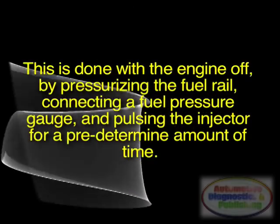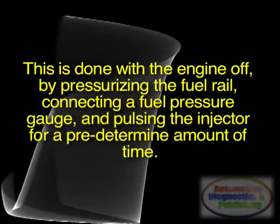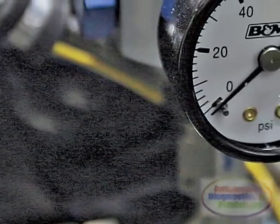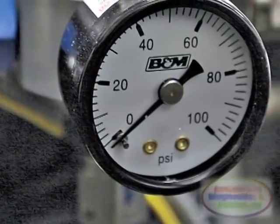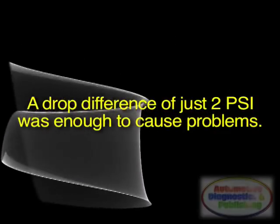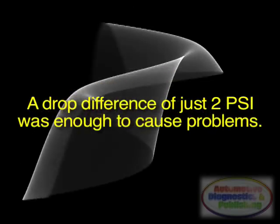The only way to prove the injector was to do a leak-down test using an injector pulser. This is done with the engine off, by pressurizing the fuel rail, connecting a fuel pressure gauge, and pulsing the injector for a predetermined amount of time. As I did the test, I saw no difference in drop between all 4 injectors. I knew that as little as a 2 PSI difference was enough to cause problems — the leaky injector should have dropped lower on the gauge when pulsing at a long pulse width. This issue was not a leaky injector.